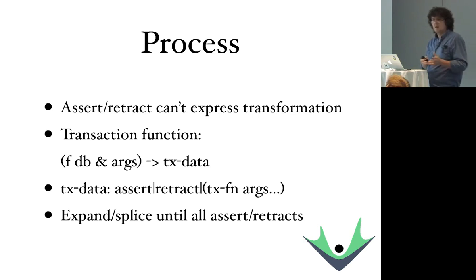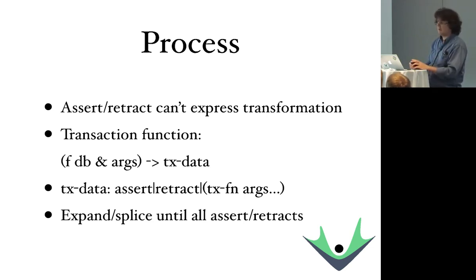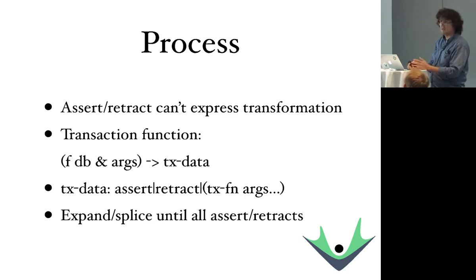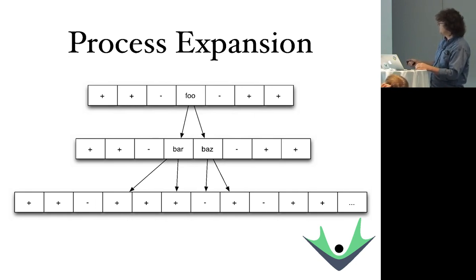The other part of the system is the process side — how do we send change across? Process is done with assertions and retractions. But assertions and retractions are insufficient to do transformation. If I want to add $10 to your account balance, just asserting a new value is potentially a race condition with somebody else adjusting your balance. So we have transaction functions — a function of the value of the database and some arguments, which produces other transaction data. A transaction is assertions and retractions and maybe calls to transaction functions. Transaction functions can return assertions, retractions, and maybe calls to other transaction functions. Their results get spliced into the transaction.